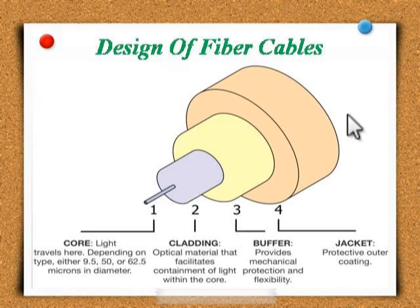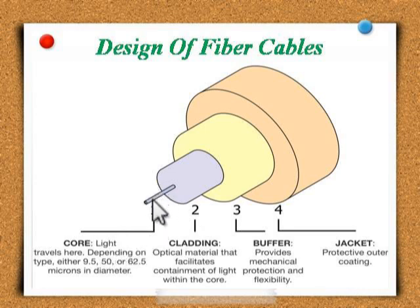First is the design of fiber cables. The first component is the core. It is the innermost layer, called the core, which is made up of pure glass and sometimes plastic as well. Light travels here, and depending on the type, it is either 9.5, 50, or 62.5 microns in diameter.